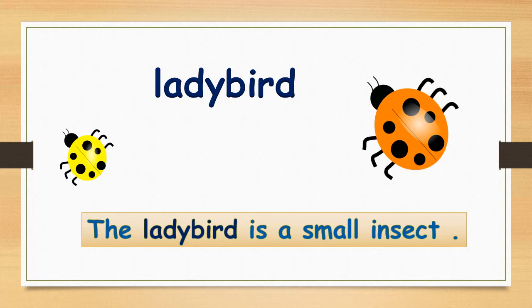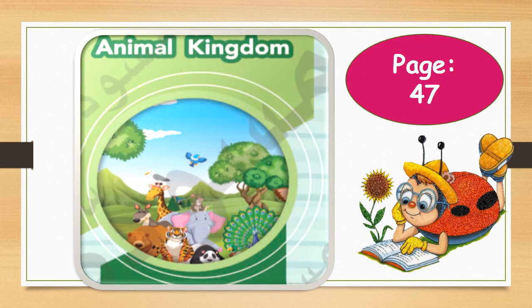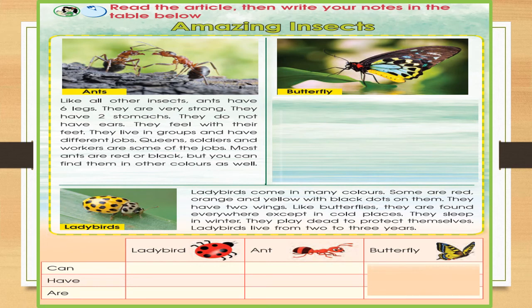The next word is dots. Ladybirds have black dots. Open your students book, page 47. We have some insects here: we have ants, we have butterflies, and we have ladybirds.